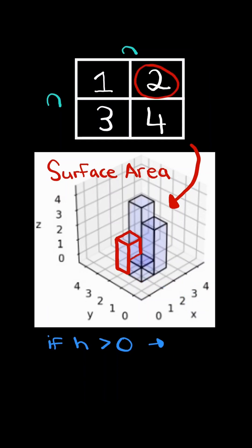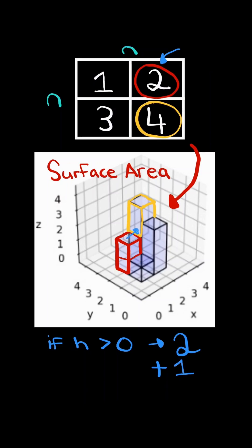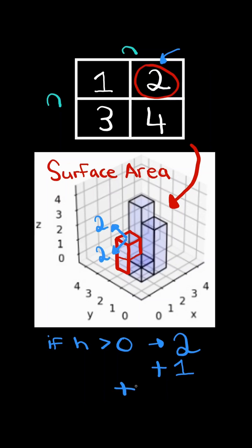Let's check the surface area of this cube of height two. Since the height is greater than zero, it has an exposed surface area from the top and bottom, so we add two. Now checking the sides starting with its neighbor of height one — since the current height is greater than its neighbor, the difference between its height and its neighbor's height is the exposed surface area from that side. The difference between two and one is one. Checking the other neighbor, its height is greater than the current height, so there is no exposed surface area on that side. Finally, the other sides have no neighbors, so the exposed surface area on each is simply the height of the cube. The total surface area of this cube is seven.